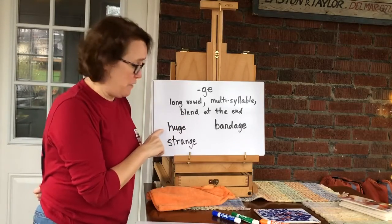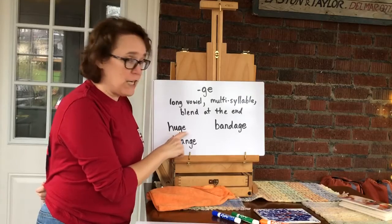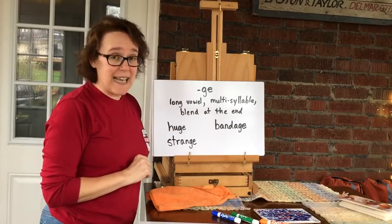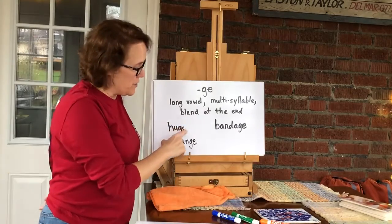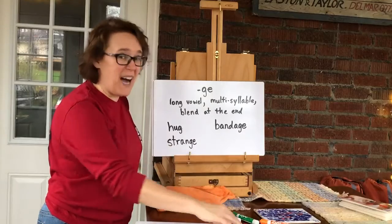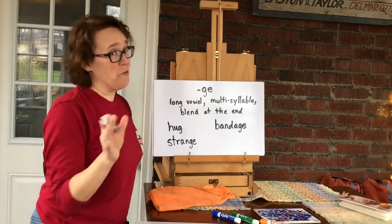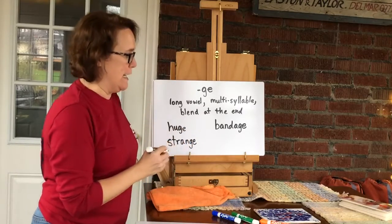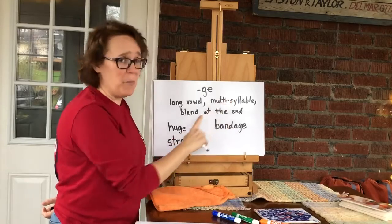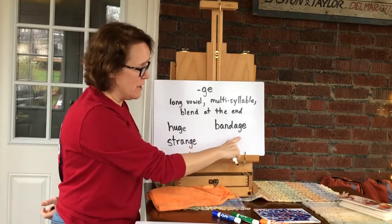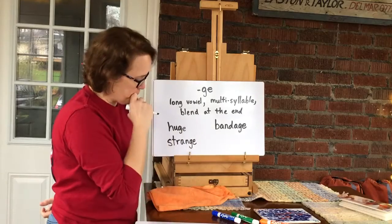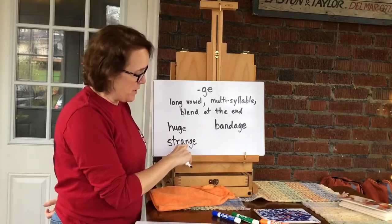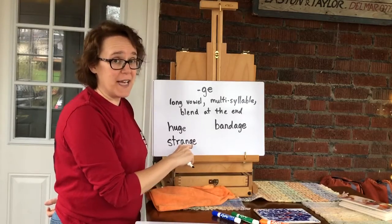Here's an example of the long vowel: H-U-G-E, huge. Here the E is doing two jobs — making the U say its name and making the G say J. If we took that E off, this word would be hug. So we want it to be huge; we know it can't end in a J, so we've got to put a G-E at the end. Bandage — there's that multi-syllable, two-syllable word. And then strange — the A is kind of saying its name, but we also have N-J at the end.